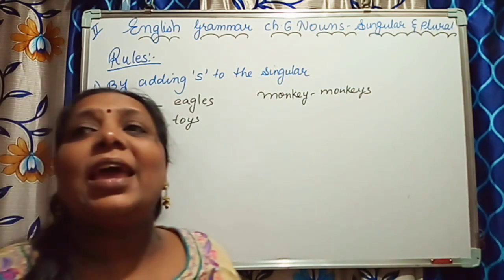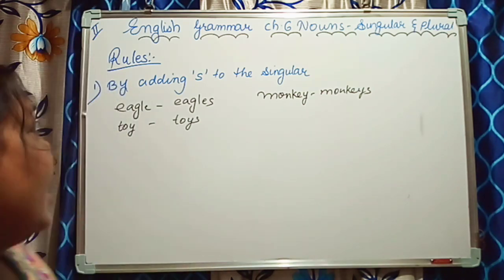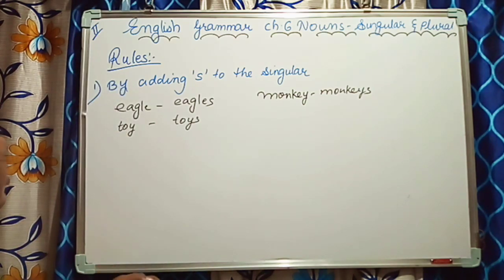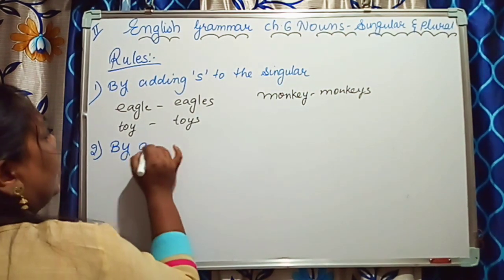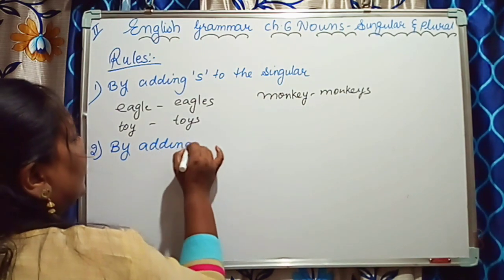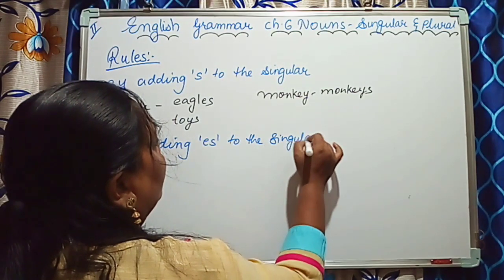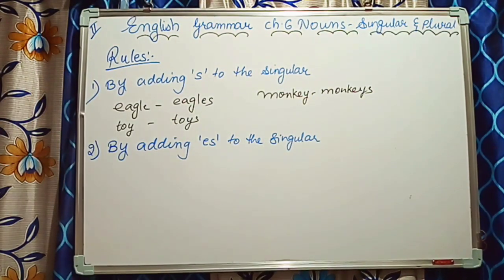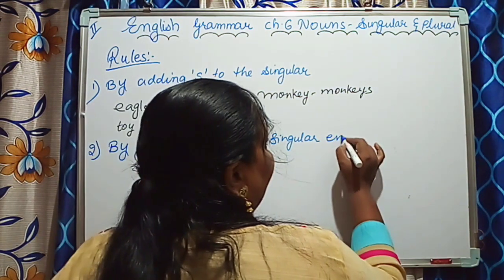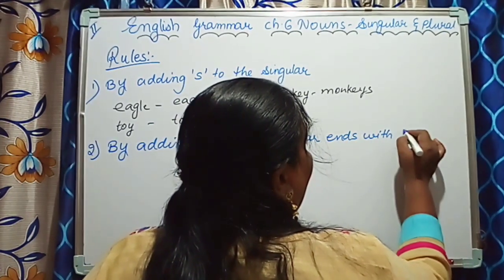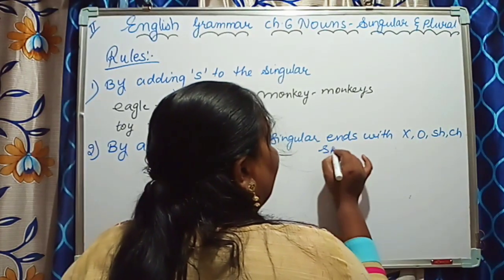It means we add S at the end of many nouns to form their plurals. Now the second rule is: by adding ES to the singular. In the case of nouns that end with X, O, S, SH, CH, or double S — we add ES.